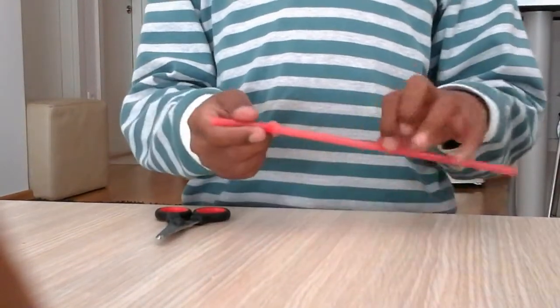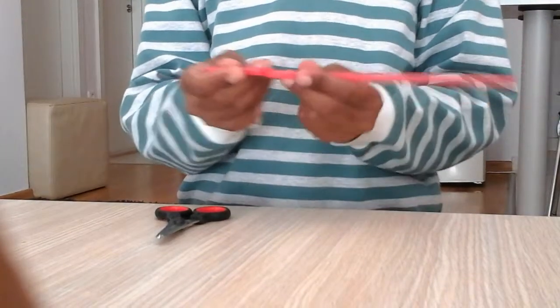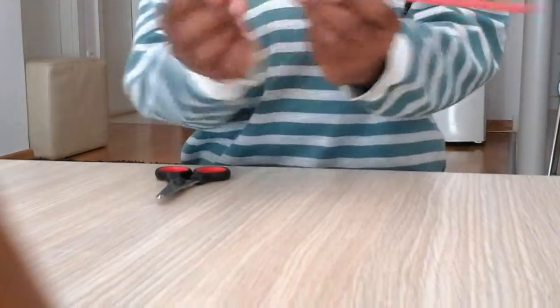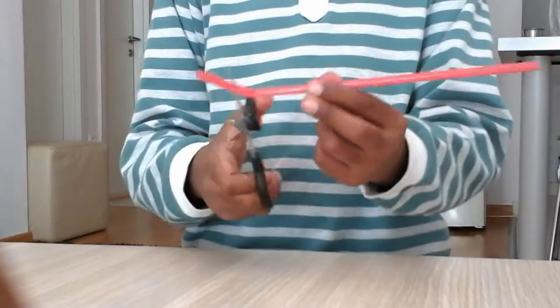So first take the straw and if you have the bending part, which is this, just cut it out.